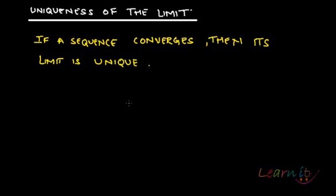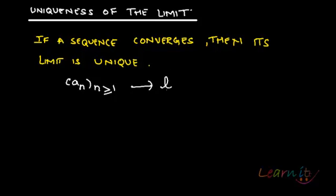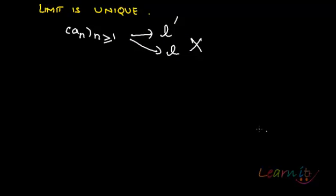If any sequence a_n converges, then its limit has to be unique. What we want to prove here is that if you have a sequence a_n, n greater than or equal to 1, then it can converge to only one limit — it cannot converge to two limits. That is what we want to prove. Let us try to prove it via contradiction.